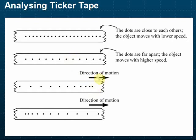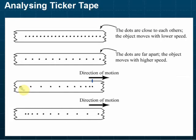If we pull this ticker tape to the right, and there's a vibrator here hitting on the ticker tape, if you pull it to the right, the vibrator will make the first dot here and keep vibrating as you pull. So this is the first dot and this is the last dot — this is the beginning of the motion and this is the end of the motion.